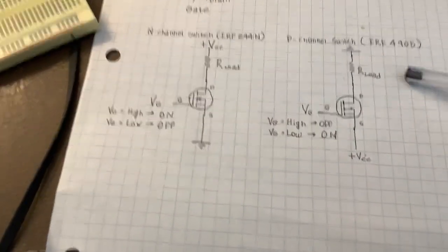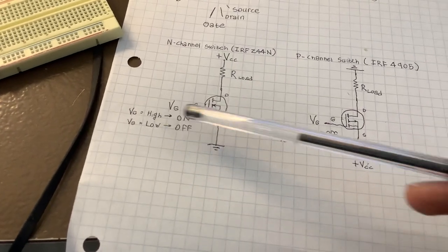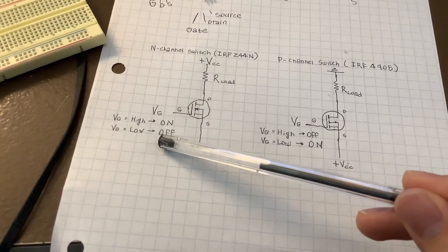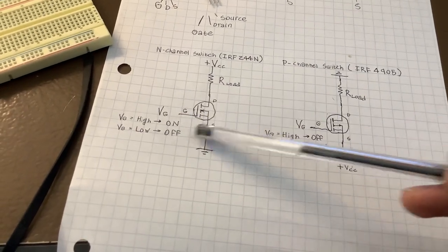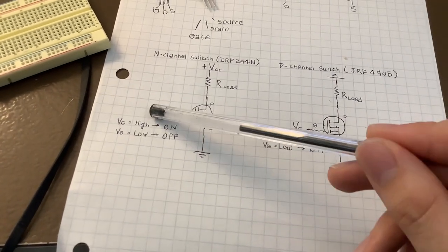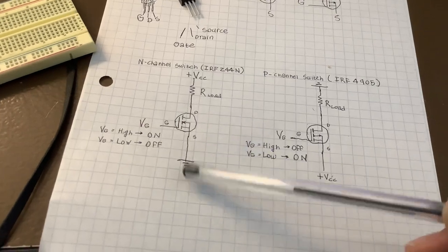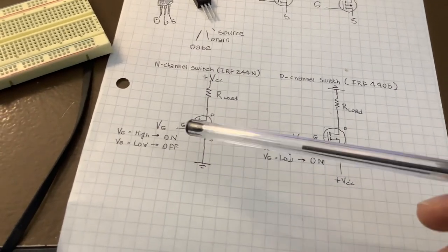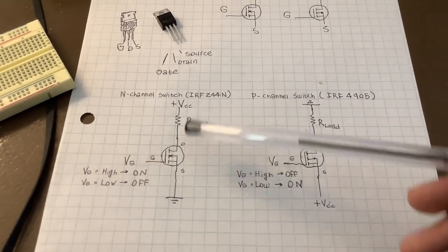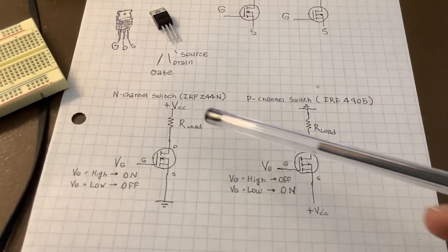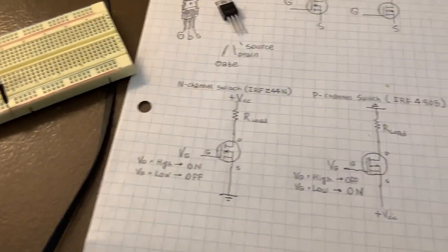You may ask how it's switching — that's controlled by VG. When VG is high with respect to VS, the MOSFET is on; when VG is low, it's off. The source is connected to ground, which is the common ground shared with your control circuitry. The ground for VG will be the same as the ground for the load. The MOSFET I'm using is the IRFZ44N.